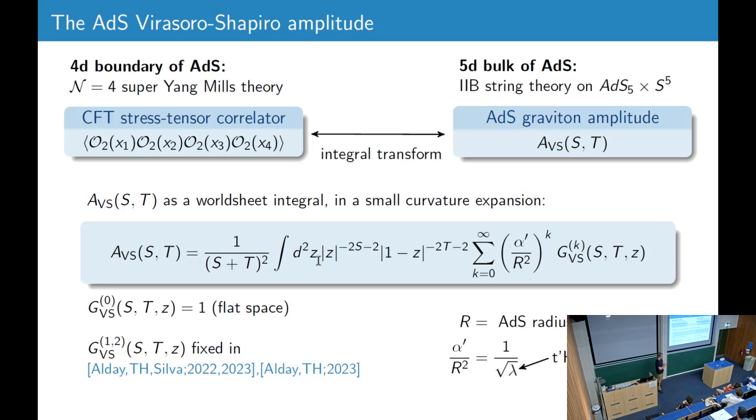And then by doing a certain integral transform, we define the AdS amplitude. And we found that we can find it in this worldsheet as a worldsheet integral over the Riemann sphere. This is a small curvature expansion here. We have alpha prime over AdS radius squared. So if we take the AdS radius large, we get back the flat space answer G0, which is one. So this is just the usual flat space Virasoro-Shapiro amplitude. In a series of papers, we found the first two curvature corrections.